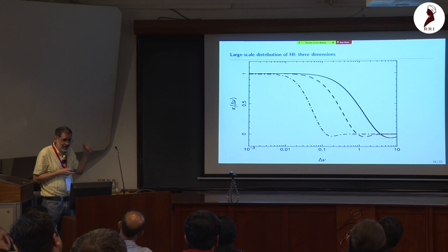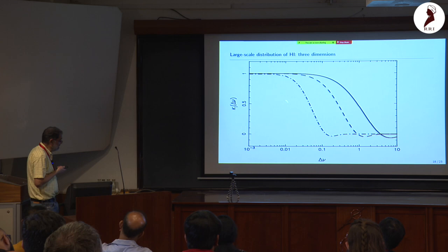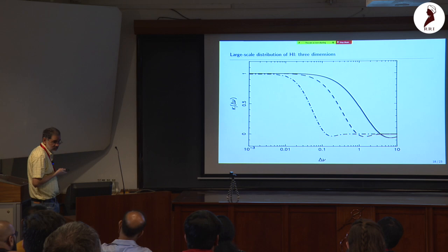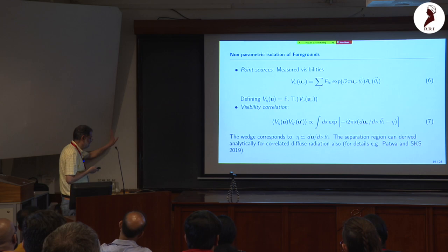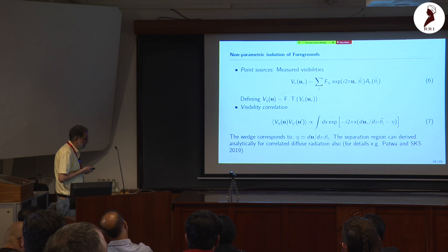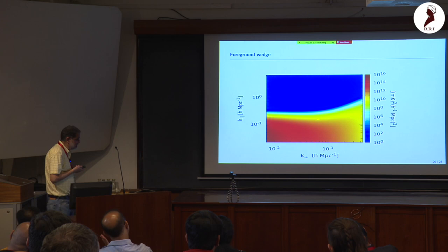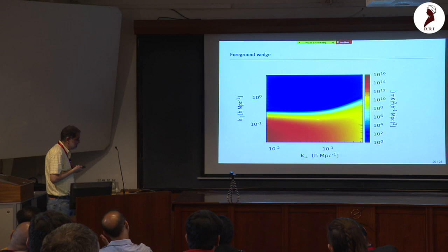The signal at redshifts 1.5, 3, and 4.5 is somewhat featureless in intensity. The key to detecting it is that if you cross-correlate maps at different frequencies, the signal decorrelates quickly — within delta-nu of 0.1 to 1 MHz for ell of 100 but much faster at ell of 1000 or 10,000. This decorrelation allows us to distinguish the HI signal from foregrounds, which are correlated across frequency while the signal is not.